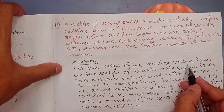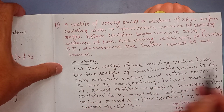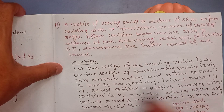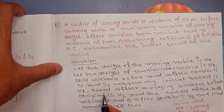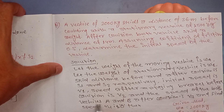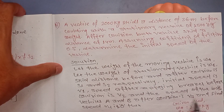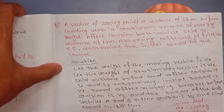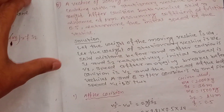Let the weight of the moving vehicle be WA and the weight of the stationary vehicle be WB. The skid distance before and after collision is S1 and S2 respectively. Initial speed is V1. Speed after applying brake before collision is V2. Speed of both vehicle A and B after collision is V3, and the final speed V4 equals 0. Given data: WA, S1, WB, S2, and friction factor F. We have three conditions: before, at, and after.